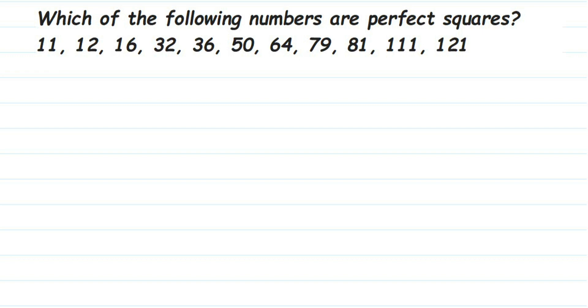Hello everyone, here's a question on square and square root. The question is which of the following numbers are perfect squares? They have given few numbers here starting from 11 up to 121. A perfect square number means when you multiply a number with itself, the product is called a perfect square. Like 3 square is equal to 9.